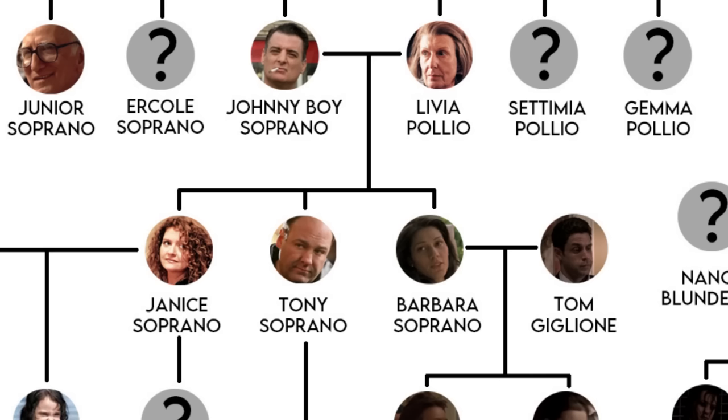Interestingly, Erkalee was named after Junior's grandfather — so that's another one that could have been added to the tree. His name was Erkalee, named after my grandfather. Junior and Erkalee never had children, but of course Johnny Boy married Livia and had three kids: Janice, Tony, and Barbara.